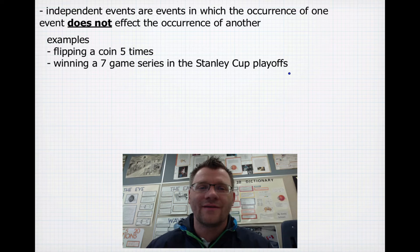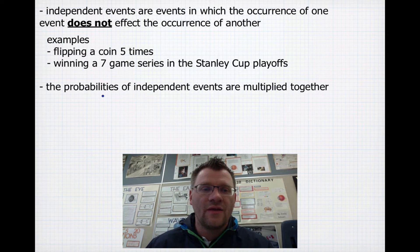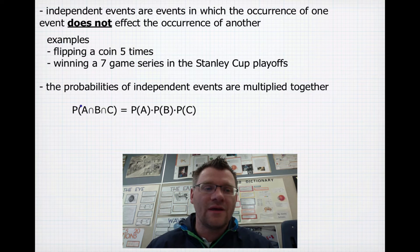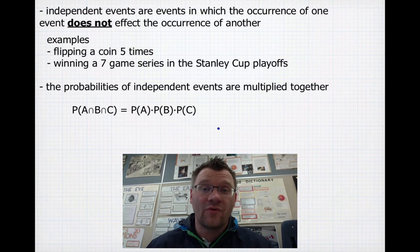Some might argue with the Stanley Cup playoffs example, but hey, that's probability. The probabilities of independent events are multiplied together. So the probability of A and B and C occurring is just going to be the probability of A multiplied by the probability of B multiplied by the probability of C. If you have 10 events occurring, you just multiply all those probabilities together.